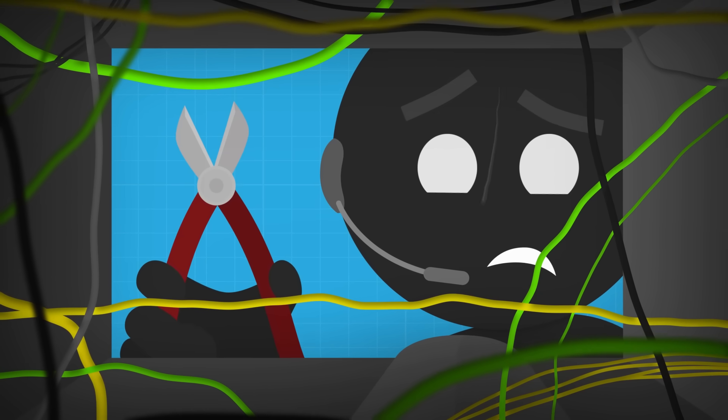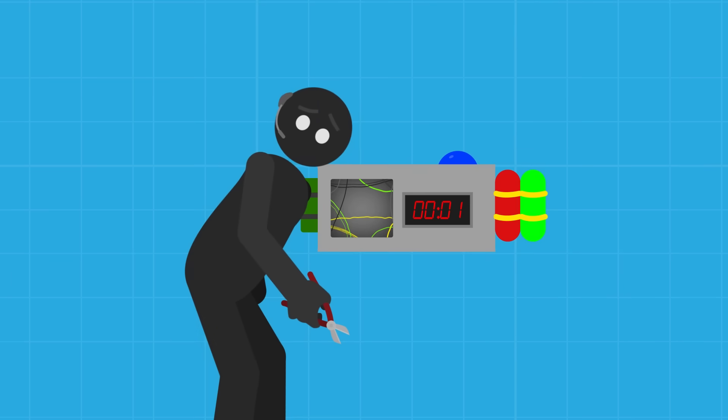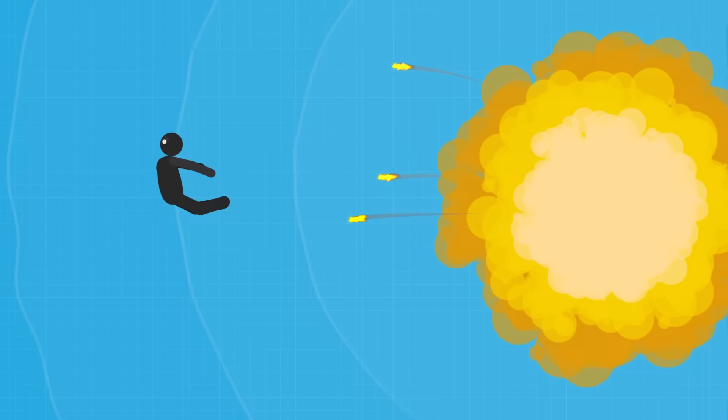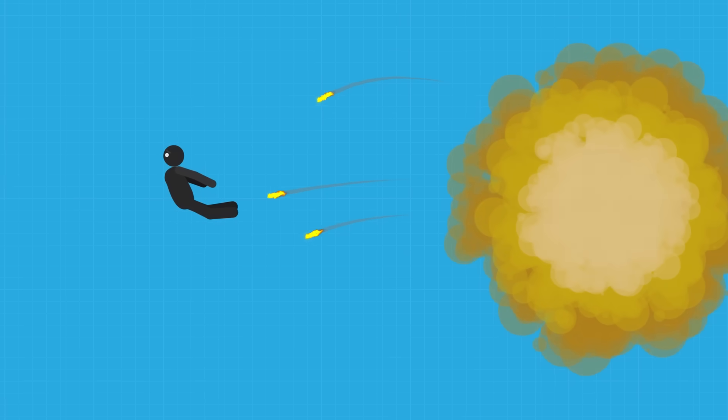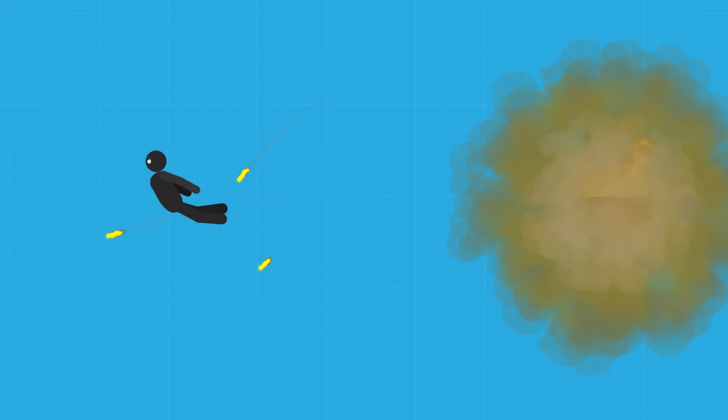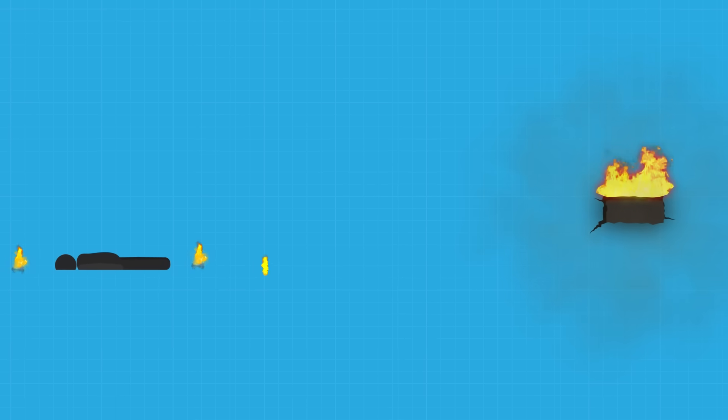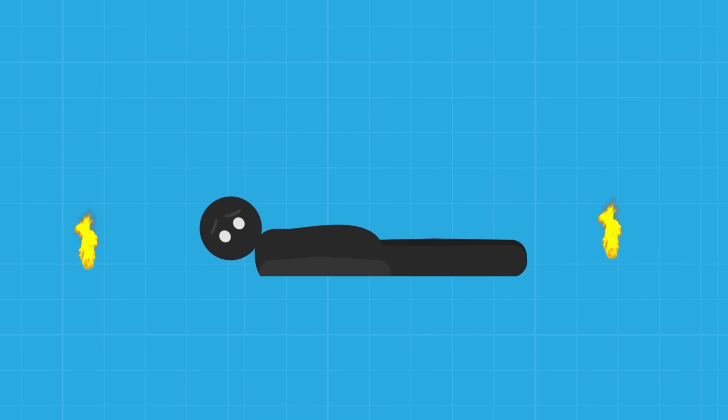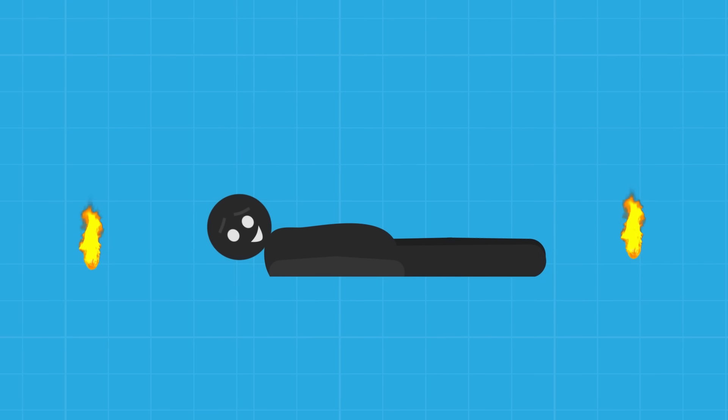It turns out the classic red wire, blue wire trope is utter nonsense, and time's almost up. Get out of there! With seconds to spare, you'll escape the immediate blast zone and be sent flying into the air by the shockwave and thrown clear of a fiery death. A little bruised and shaken, you'll dust yourself off and thank your lucky stars that movie physics are as accurate as you thought.